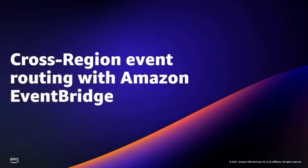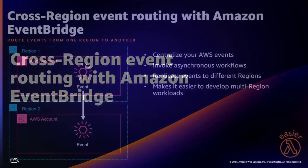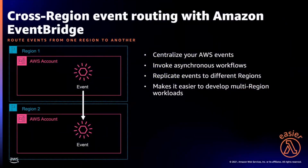Next is cross-region event routing with Amazon EventBridge. You can now route events from any AWS region to other supported regions. The main benefits are: you can centralize your AWS events into one region for auditing and monitoring, invoke asynchronous workflows in a different region from a source event, and replicate events to different regions to help synchronize data in cross-region data stores. This makes it easier to develop multi-region workloads.